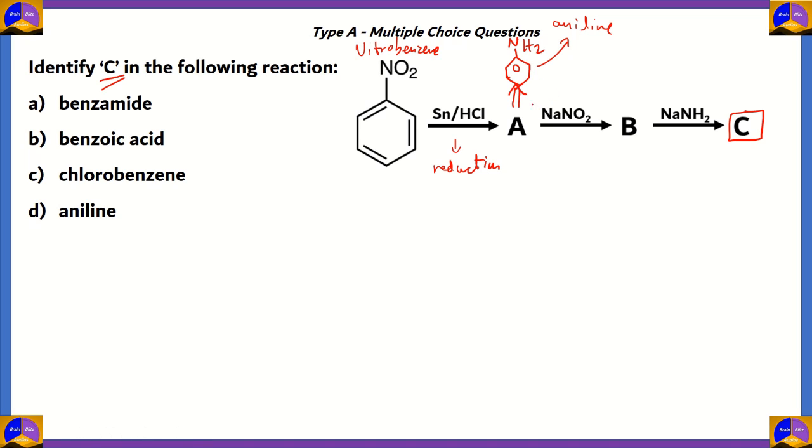Now, aniline will now react with NaNO2. Usually when NaNO2 reacts in cold conditions in the presence of a dilute acid. So, this is what the complete reagent should look like, or the complete scenario should look like. They only said NaNO2, but in actuality, there'll be dilute acid, which is HCl, under cold conditions. So, aniline reacts with NaNO2 HCl under 5 degrees Celsius.